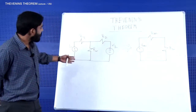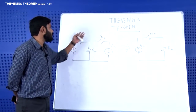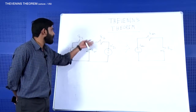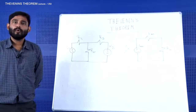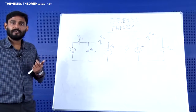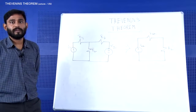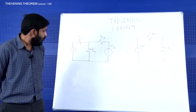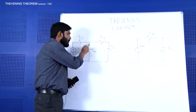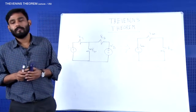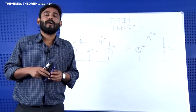Now, take this example circuit. It contains two voltage sources and three resistances. If I want to know what amount of current is passing through this particular resistance R — our point of interest — or what amount of voltage is across it, there are certain methods to calculate that.